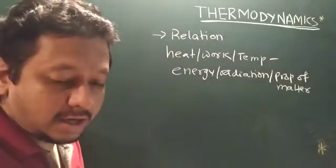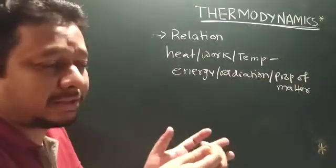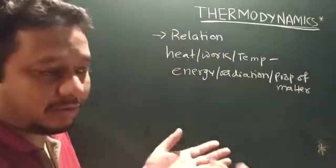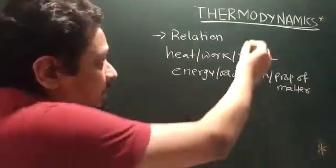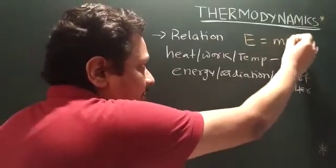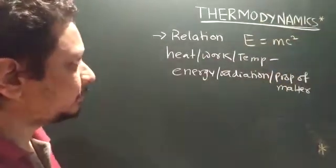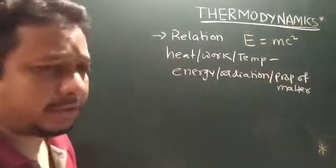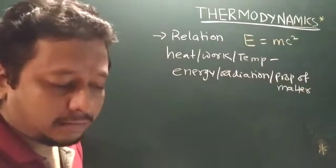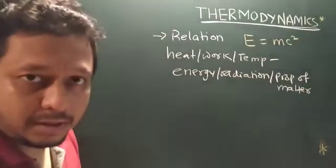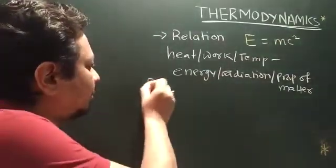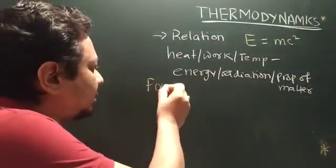Thermodynamics has a foundation given by the great scientist Einstein through the relativity theory — E equals mc squared. We will be discussing more on work and energy in a separate video. Now, what are the four laws of thermodynamics? Let us see.